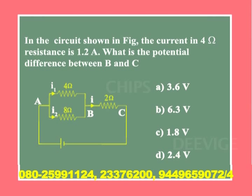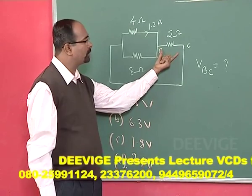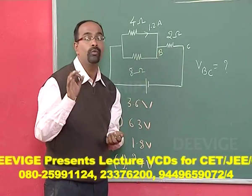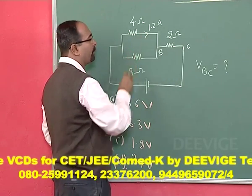In the circuit shown in the figure, the current in the 4 ohm resistance is 1.2 amperes. What is the potential difference between B and C? In this problem they have not given the voltage source value, and you are asked to find out this voltage. But they have given what is the current flowing in one of the branches — here the current flowing is 1.2 amperes.